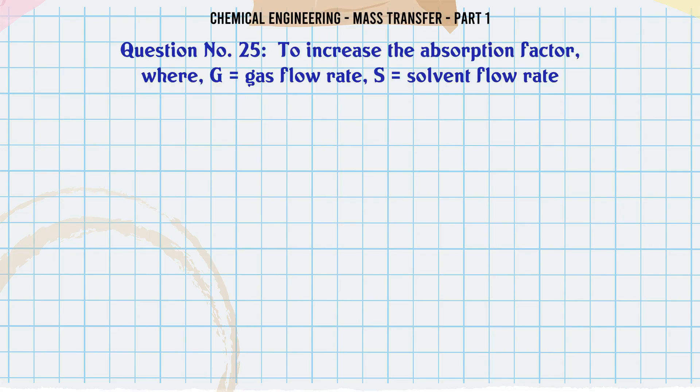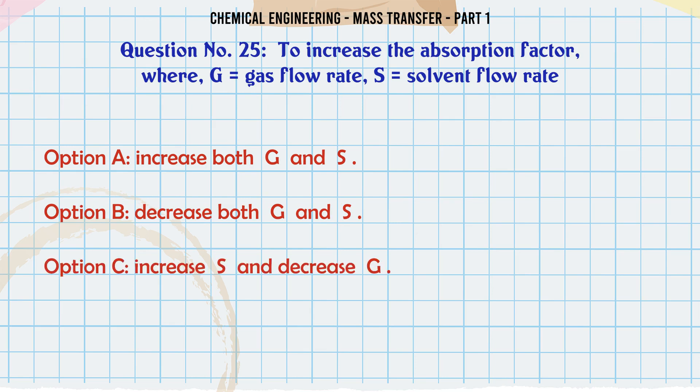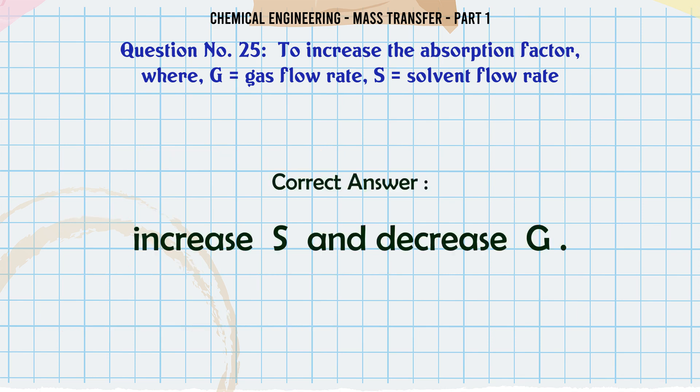To increase the absorption factor, where G is equal to gas flow rate and S is equal to solvent flow rate: A. Increase both G and S. B. Decrease both G and S. C. Increase S and decrease G. D. Increase G and decrease S. The correct answer is Increase S and decrease G.